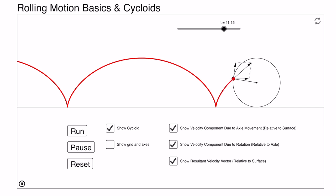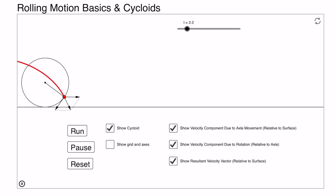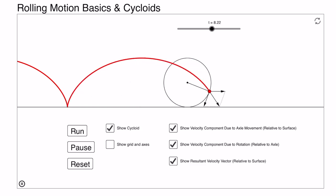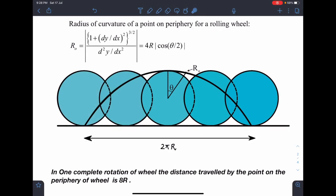Now I'll give you more idea about this cycloid and its radius of curvature. The radius of curvature of a point on the periphery of the rolling wheel—any point which is lying on this trajectory—is given by the standard formula: (1 + (dy/dx)²)^(3/2) divided by d²y/dx². When we calculate, it was easier in this format.